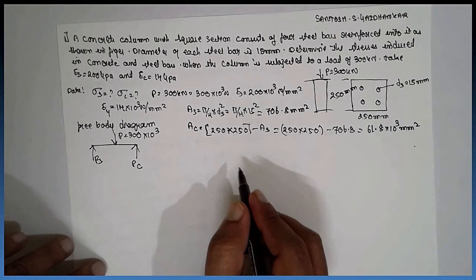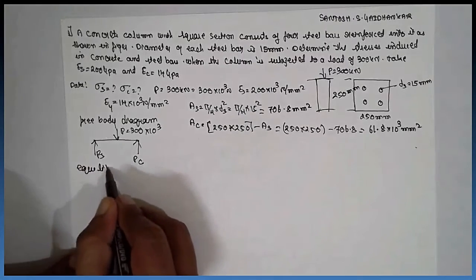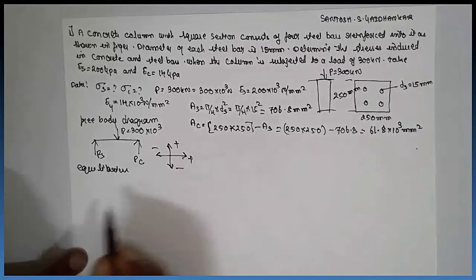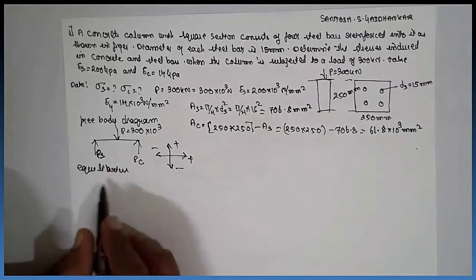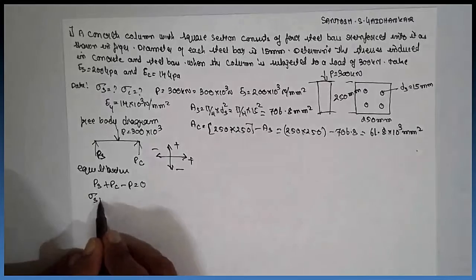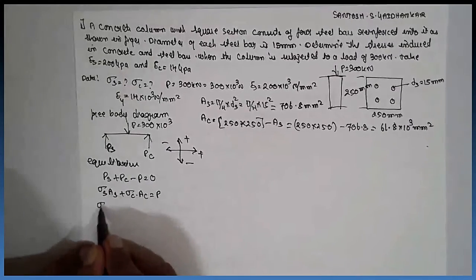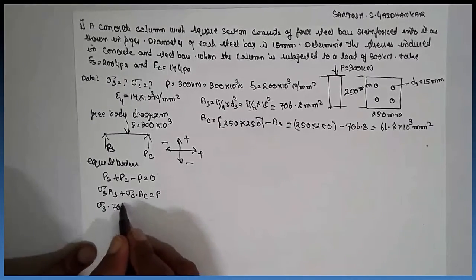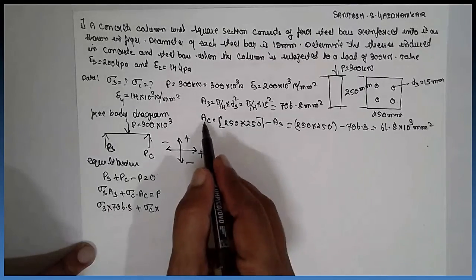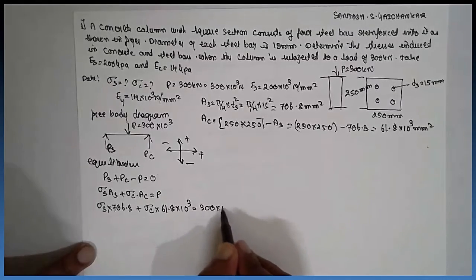After getting the area of concrete, we come back to the free body diagram. Now using equilibrium condition: PS plus PC minus P equals zero. Sigma S times AS plus Sigma C times AC equals P. That's Sigma S times 706.8 plus Sigma C times 61.8 times 10 to the power 3 equals 300 times 10 to the power 3.